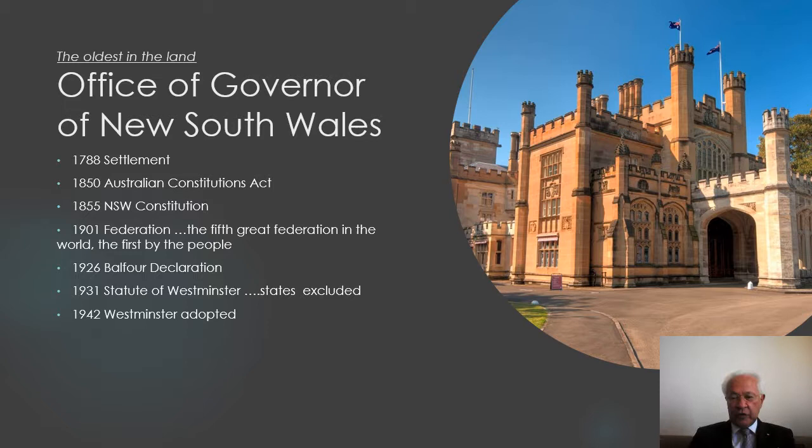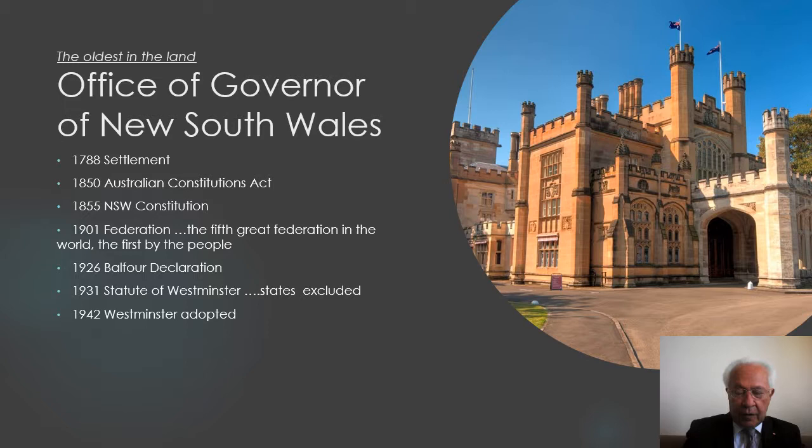That system even continued after the adoption of the Statute of Westminster federally, and it was to continue until later in the 20th century — and rather inappropriately — because it meant that any appointment of Governor, and matters relating to the states concerning the Crown, went through the Foreign and Commonwealth Office in London, and not directly to the Queen, nor through Canberra.